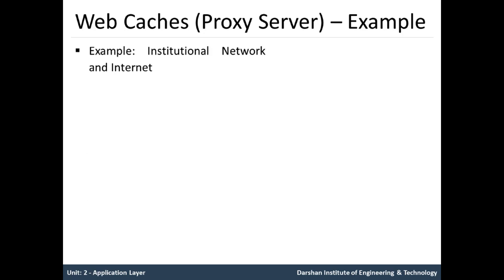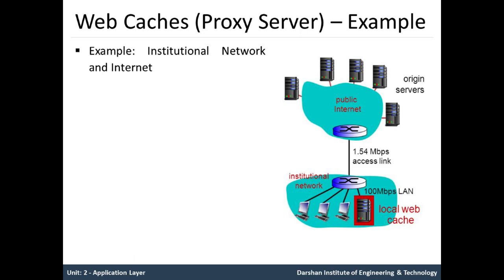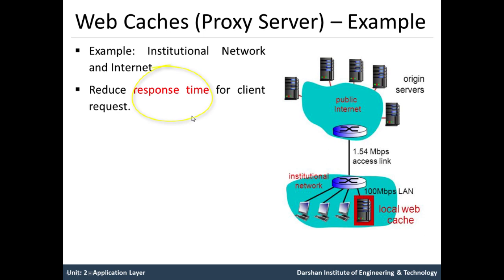In a web proxy server scenario, consider our institute network and internet connection. The PCs are connected to each other and we have a local web cache. The network bandwidth within the institute is 100 Mbps, which is connected to the public internet. The access link bandwidth is 1.54 Mbps. This creates a bottleneck — the internal speed is higher, but the access link bandwidth is lower, which increases response time for client requests.